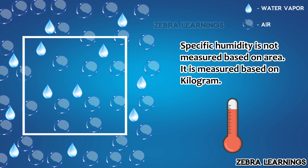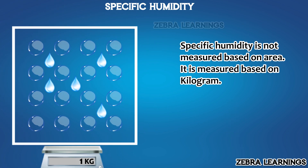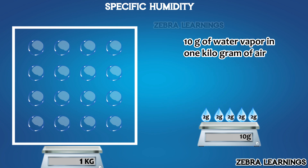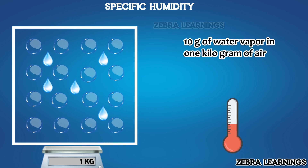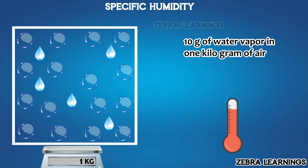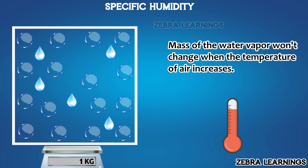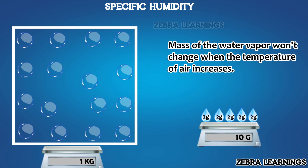But specific humidity is not measured based on area — it is measured based on the mass of the air. That is, we measure how much water vapor is present in one kilogram of air. Let's assume there are 10 grams of water vapor in one kilogram of air. When the temperature of the air increases, both the air molecules and the water vapor expand. Even though they expand, the mass of the air remains the same — it will still be one kilogram. Since specific humidity is based on mass, the value of water vapor in it remains constant and does not change.